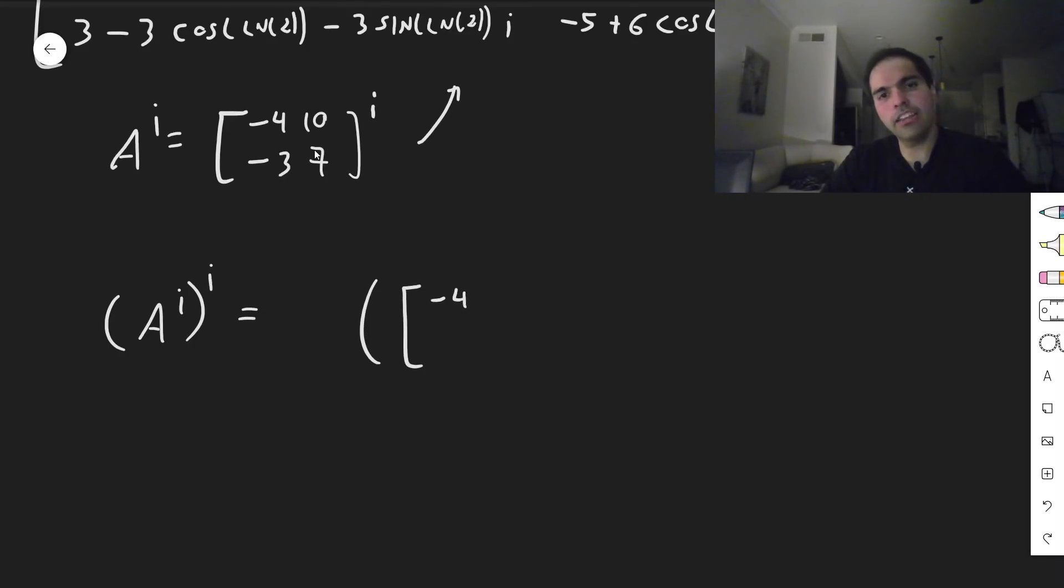So let's say A to the i to the i, that becomes minus 4, 10, minus 3, 7 to the i, to the i-th power. And now let's just use the diagonal matrices, that's a bit easier, 2, 5, 1, 3.